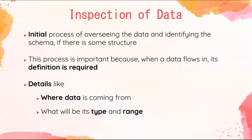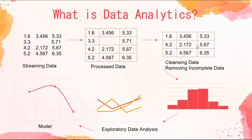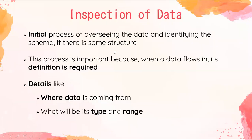The first step is examination, also called inspection. Here, we examine the data coming from the sensor and try to allocate it to a schema — a structure containing tables with rows and columns. The definition of the data is very important: where it is coming from, what its type is (temperature, moisture, etc.), and what its range is. Based on this definition, a further solution can be designed and implementation can proceed.